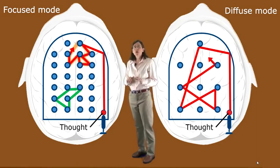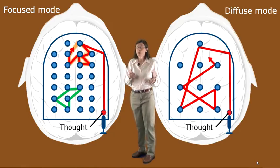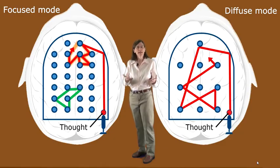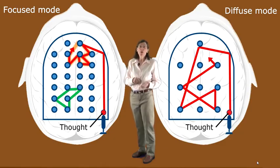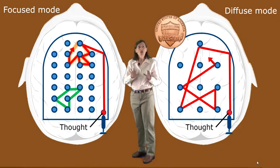Now as far as neuroscientists know right now, you're either in the focused mode or the diffuse mode of thinking. It seems you can't be in both thinking modes at the same time. It's kind of like a coin. You can see either one side or the other side of the coin, but not both sides at the same time.